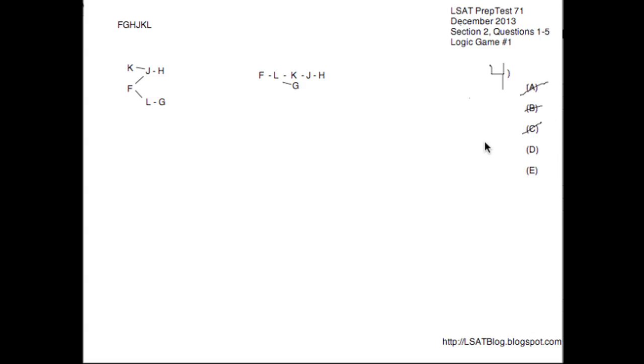Looking at D, J before G. Well, we really don't know how J and G relate. They're not really determined. G could be before or after J. We don't know. So D is a possibility, and that's our answer. Taking a quick look at E, J before L. No, L is definitely before J here. We see that clearly, so E is gone, leaving D for number 4.